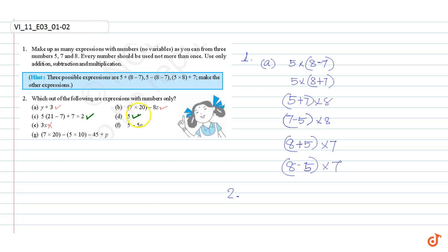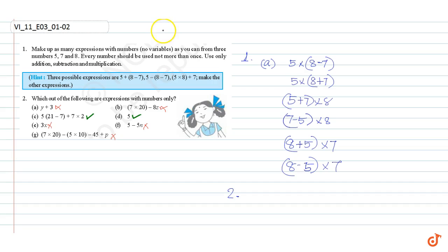This expression has variable x, this expression has variable n, and this expression has variable b. So our answer is C and D.